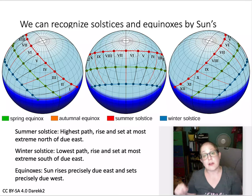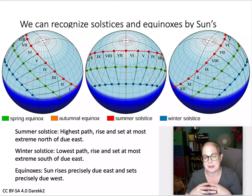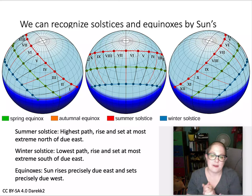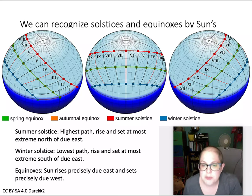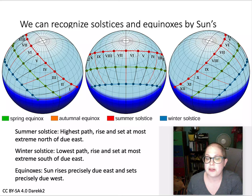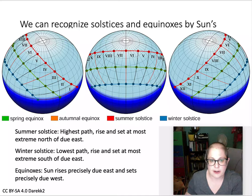The winter solstice is the lowest path — the Sun goes through a shorter path in the sky, so it's up for less time, as anyone in New Hampshire well knows. Less time in the sky means it's colder, and the Sun also doesn't reach a very high altitude during the day — the sunlight is more indirect so we don't get heated up as much. In between, the spring and autumn equinoxes have the same path: the Sun rises directly in the east and sets directly in the west, but it's still not going directly overhead for an observer in the northern hemisphere.